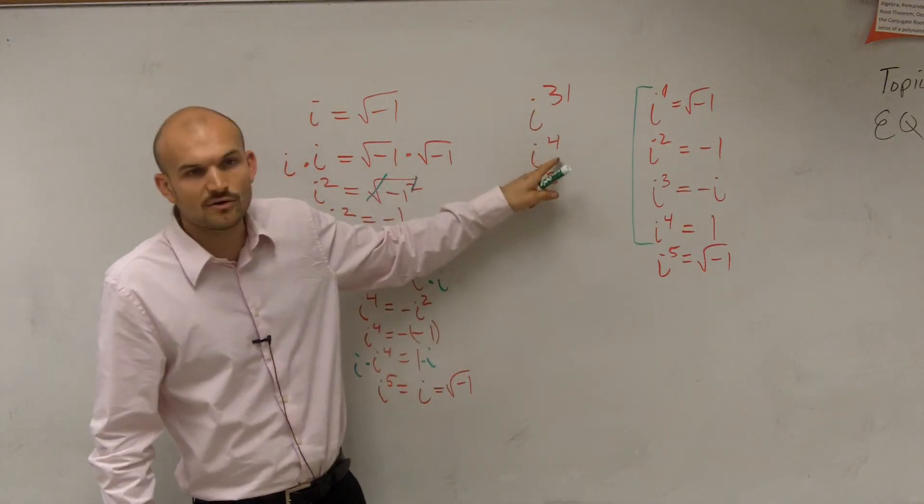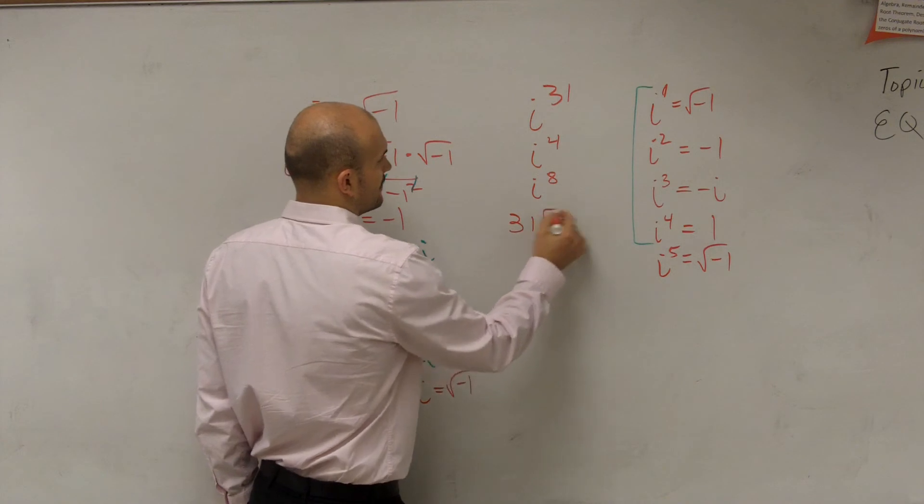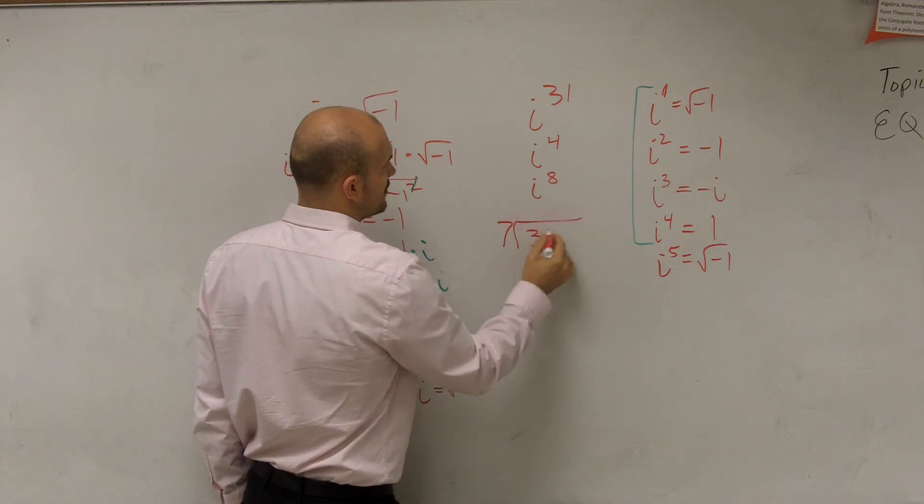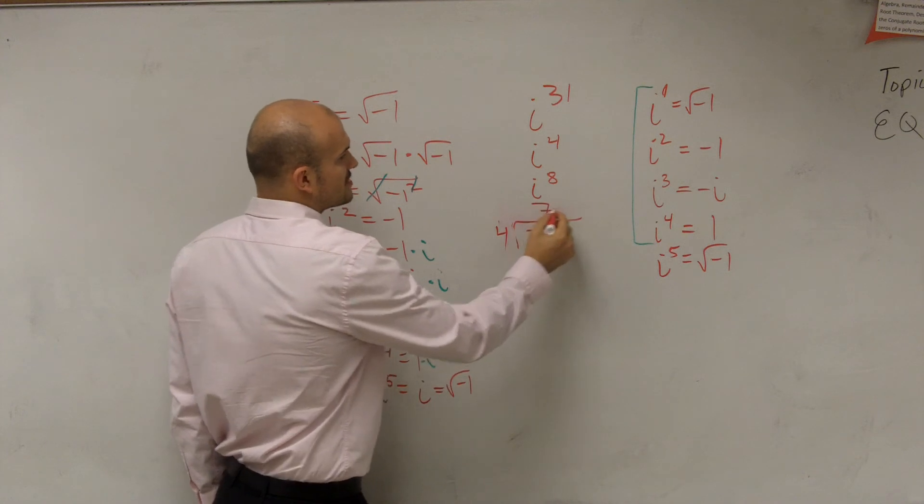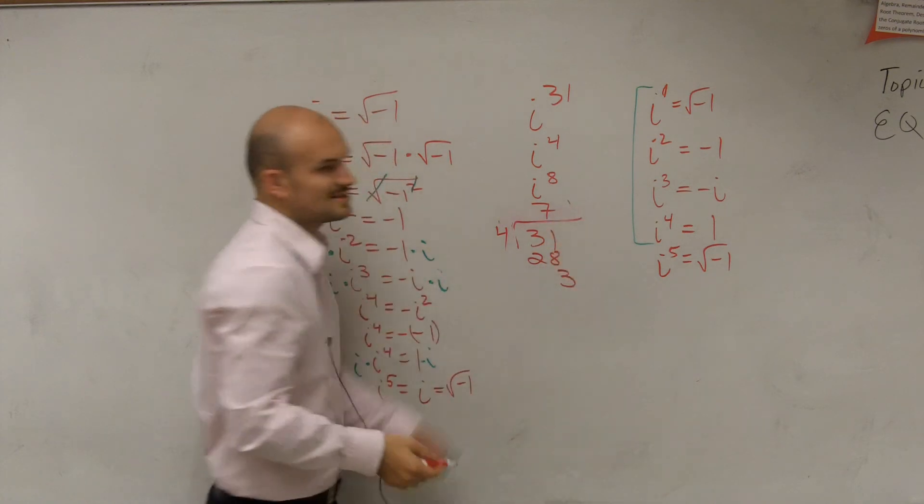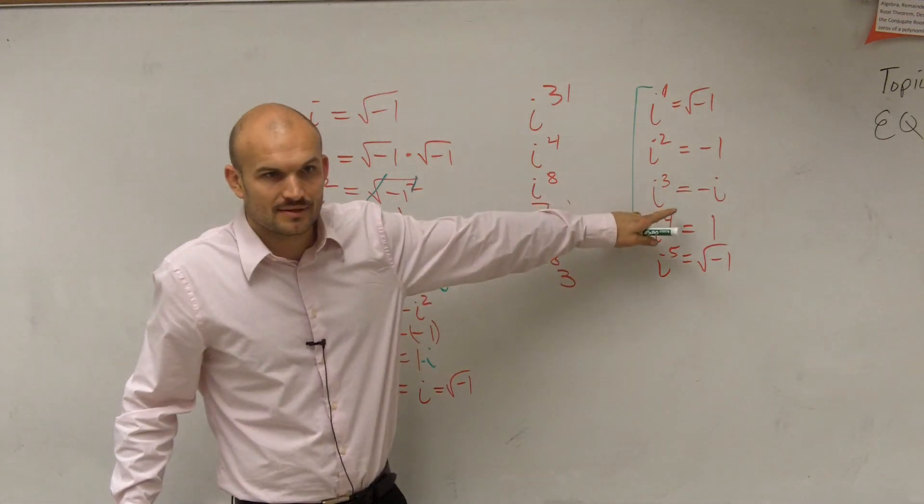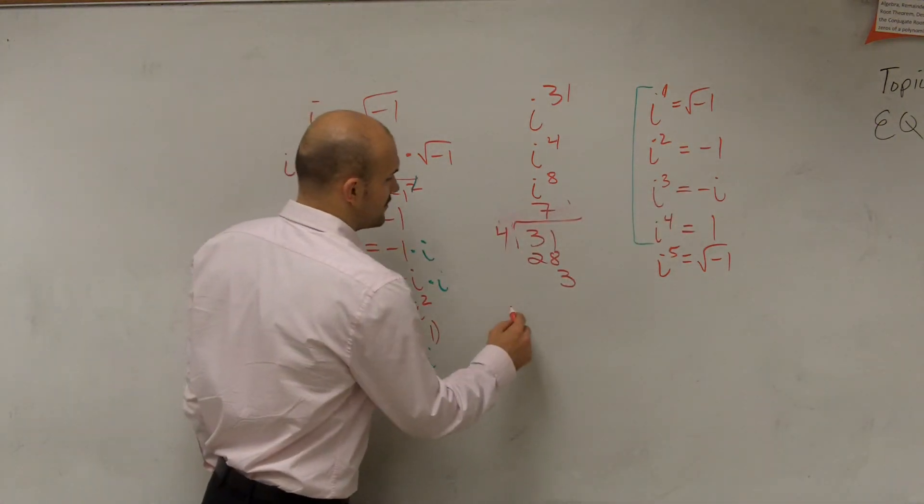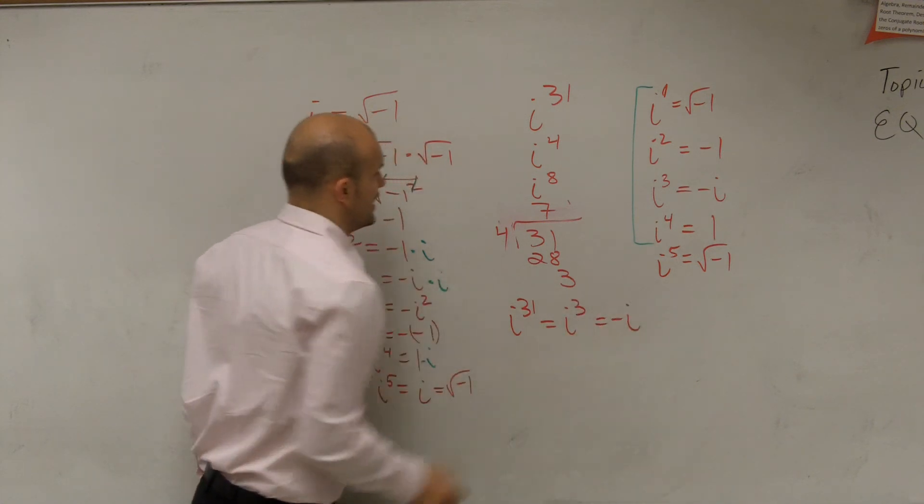So how many times does this cycle of four divide into 31? Seven times. Because you do 31, if you guys remember, or... So you could say four divides into 31 seven times, right? You don't need to do long division, but you guys can see there's a remainder of three. Whatever your remainder is, is going to be your exponent. So therefore, since I have a remainder of three, my exponent is i cubed. Therefore, I can write i to the 31st is equal to i cubed, which is equal to negative i.